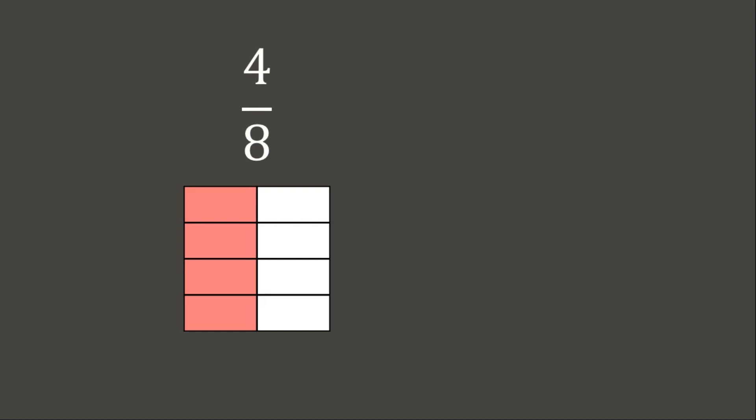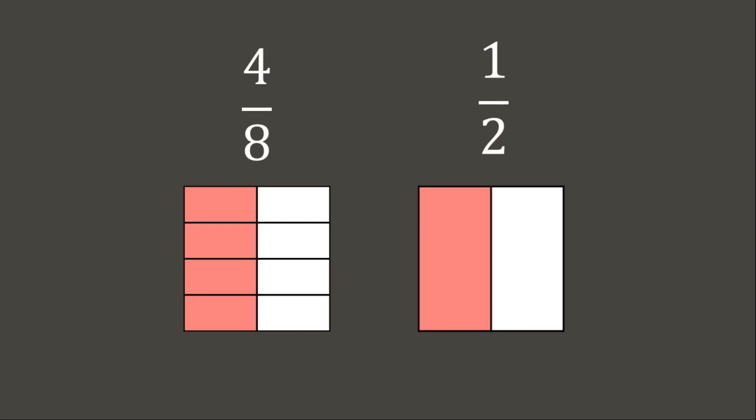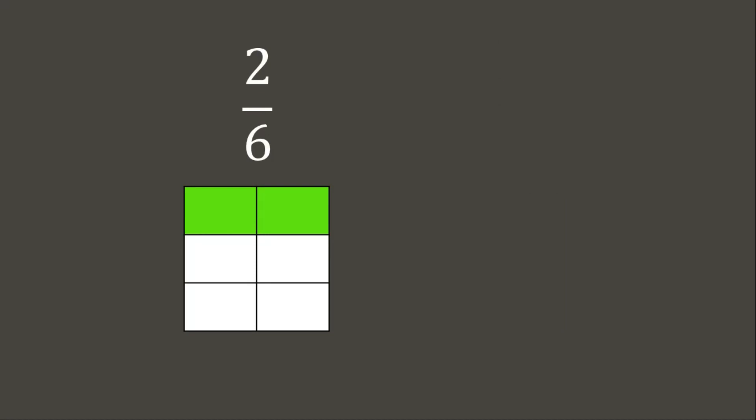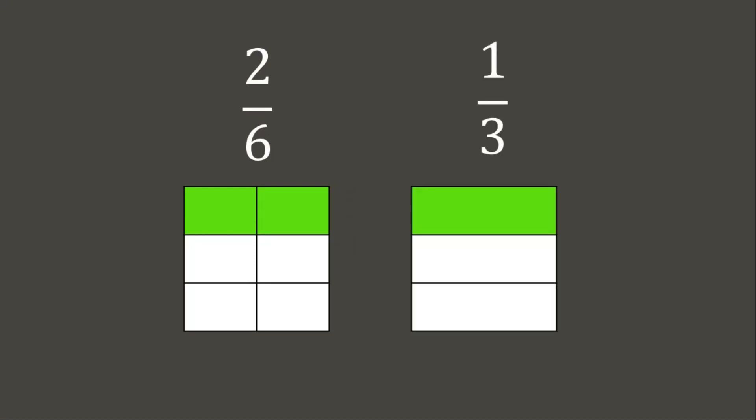For example, four-eighths is equivalent to one-half. One-half is the lowest equivalent fraction, or lowest term, of four-eighths. Also, two-sixths is equivalent to one-third, and one-third is the smallest or the lowest equivalent fraction of two-sixths.